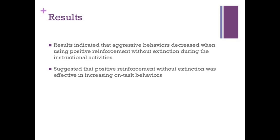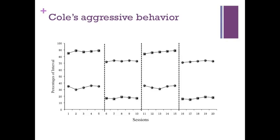Results indicated that aggressive behaviors decreased when using positive reinforcement without extinction during instructional activities, and that positive reinforcement without extinction was effective in increasing on-task behaviors. For Cole, during baseline, aggressive behaviors were stable and occurred an average of 87.6% of intervals over five sessions, while on-task behaviors occurred an average of 33.8%. When treatment was implemented, aggressive behaviors decreased to an average of 17.4% and on-task behaviors increased to an average of 73.2%.